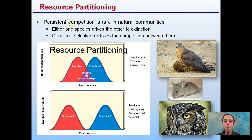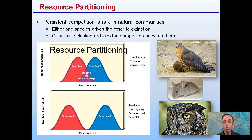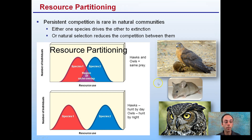As a result of resource partitioning, persistent competition is rare in natural communities. Either one species drives the other to extinction, or natural selection reduces the competition between them. An example of resource partitioning is hawks and owls — they both prey on mice, creating a region of niche overlap. However, due to resource partitioning, we see separation that reduces this overlap. Hawks and owls are still eating mice, but hawks hunt by day and owls at night. This separates and reduces direct competition so they're not competing for the same prey at the same time.